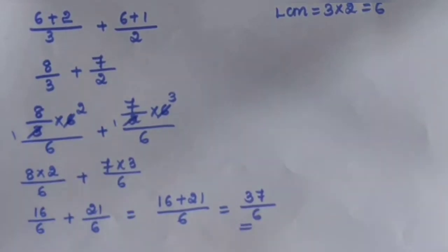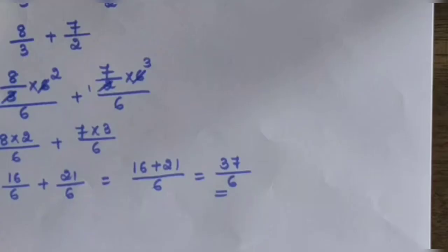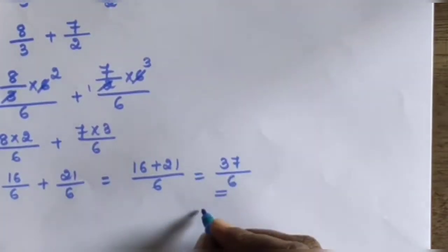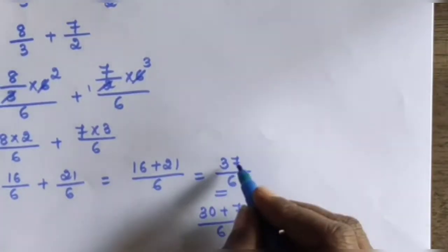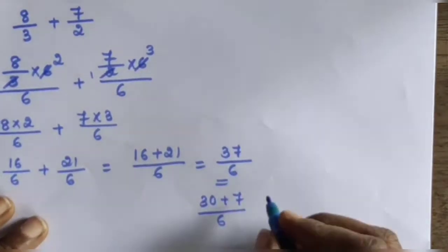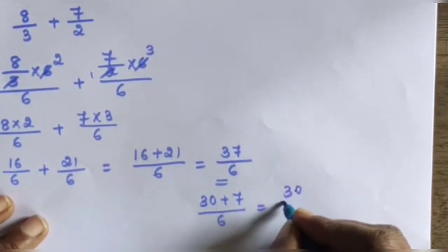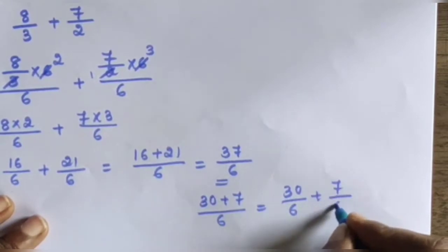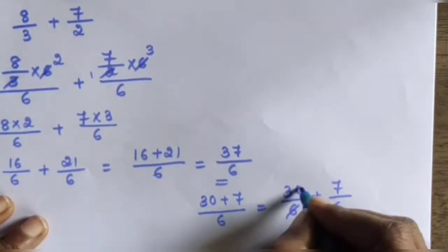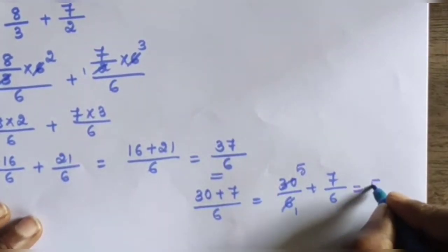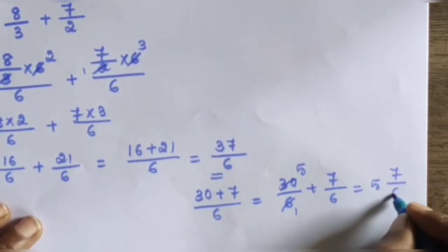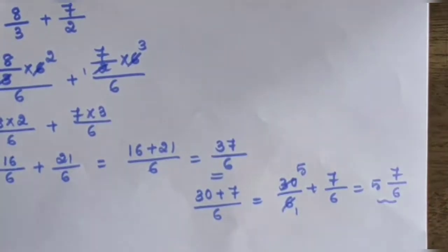This answer 37/6 is an improper fraction, so convert it into a mixed fraction. 37 equals 30 plus 7 divided by 6. 30 divided by 6: 6 fives are 30. So the answer is 5 and 7/6 as a mixed fraction.